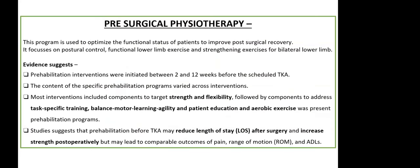Before a person undergoes surgery, it is recommended to optimize their functional status for an early and speedy post-surgical recovery. This pre-surgical physiotherapy is focused on postural control, functional lower limb exercise, and strengthening exercises for bilateral lower limbs. Recent evidence suggests pre-habilitation interventions are initiated between 2 and 12 weeks before scheduled TKR. The program includes strength and flexibility, task-specific training, balanced motor learning, agility, and patient education with a focus on aerobic exercises.